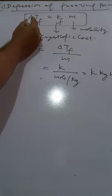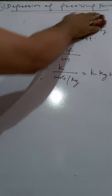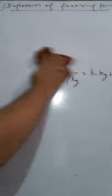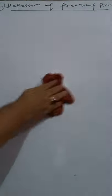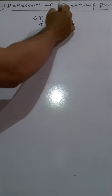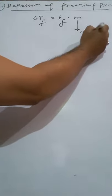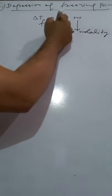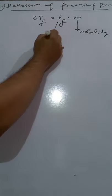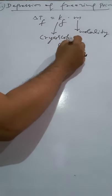As we all know, delta Tf is equal to KF into M. Here M is the molality, and KF is the cryoscopic constant.